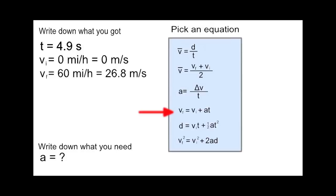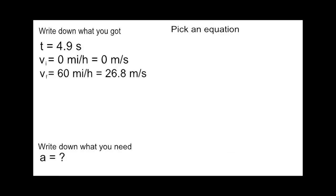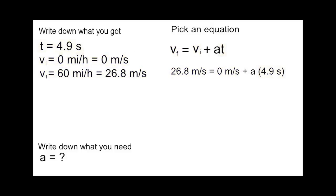So we've chosen vf equals vi plus at. Now we need to substitute: 26.8 meters per second is our final velocity, the initial is zero, and the time is 4.9 seconds. Now solve and succeed. The acceleration is 5.5 meters per second squared.